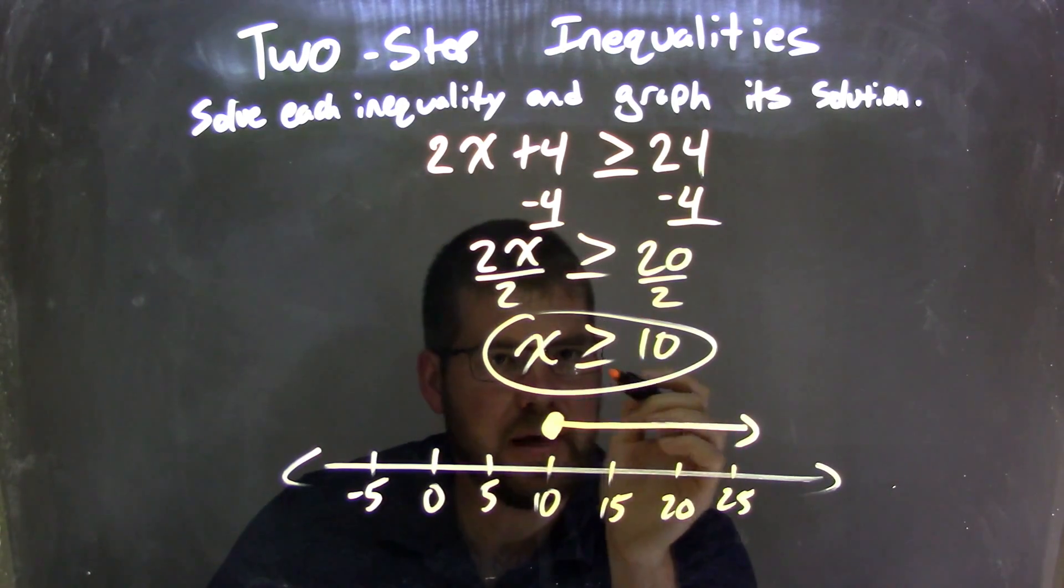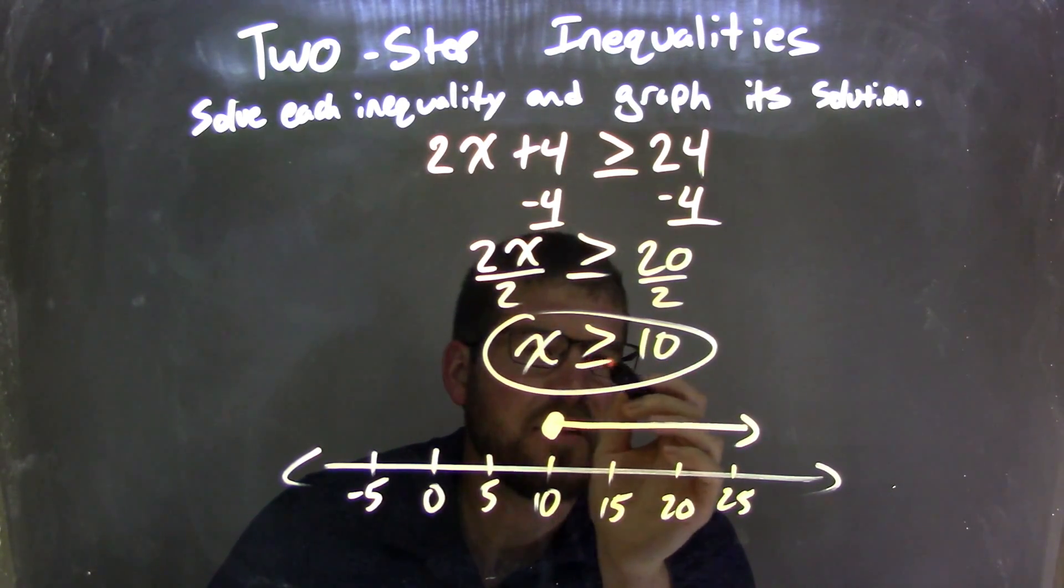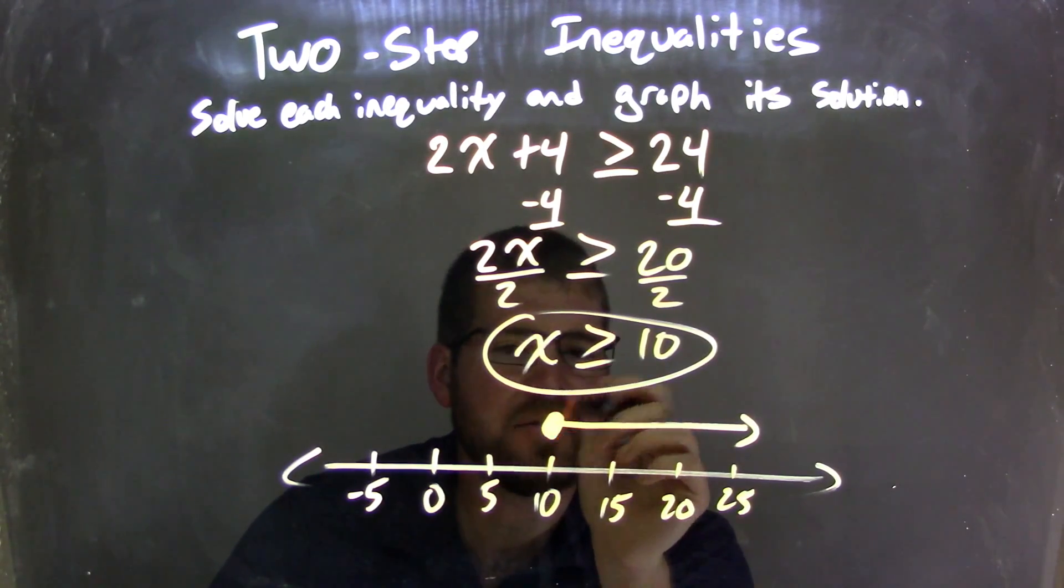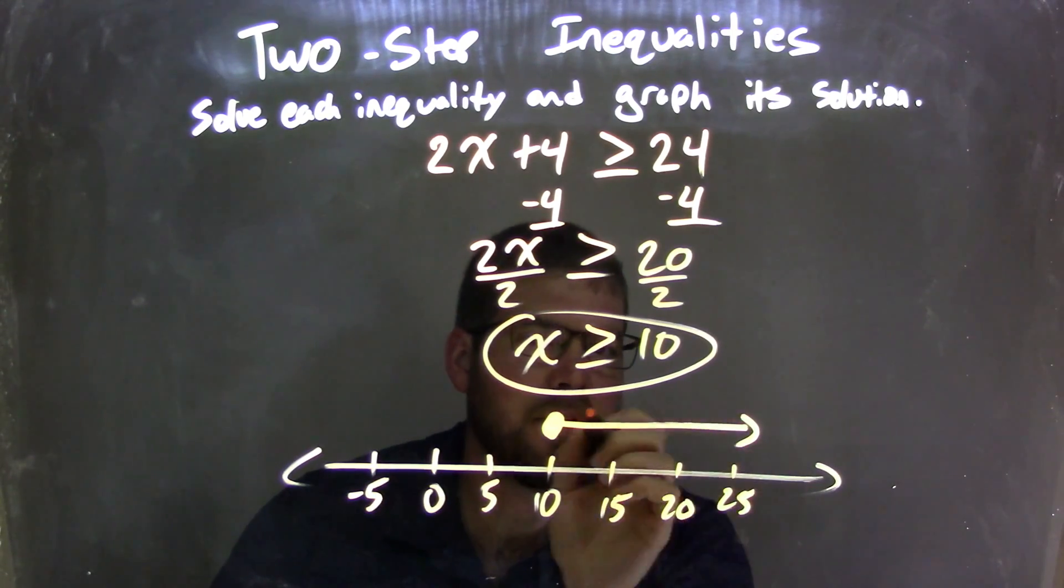Once x was isolated here, we know now that we have to take, since it's an equal to sign, a closed circle over where 10 is. Then, since x is greater than, we shade to the right, or put the arrow to the right, where all the values are greater than 10 as well.